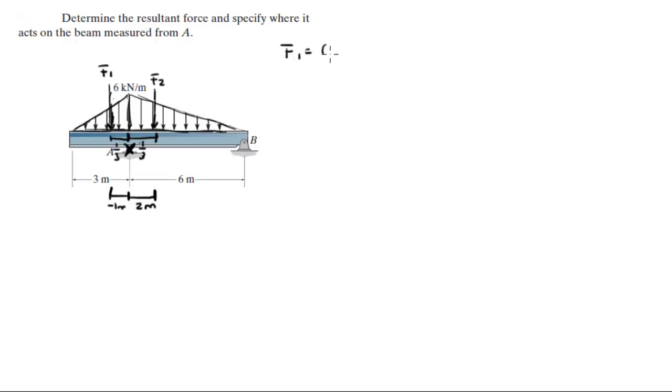F1 is equal to six kilonewtons per meter times the distance which is three meters, divided by two because it's a triangle and the area of a triangle is given as length times width divided by two. So six times three is 18 divided by two is nine kilonewtons.